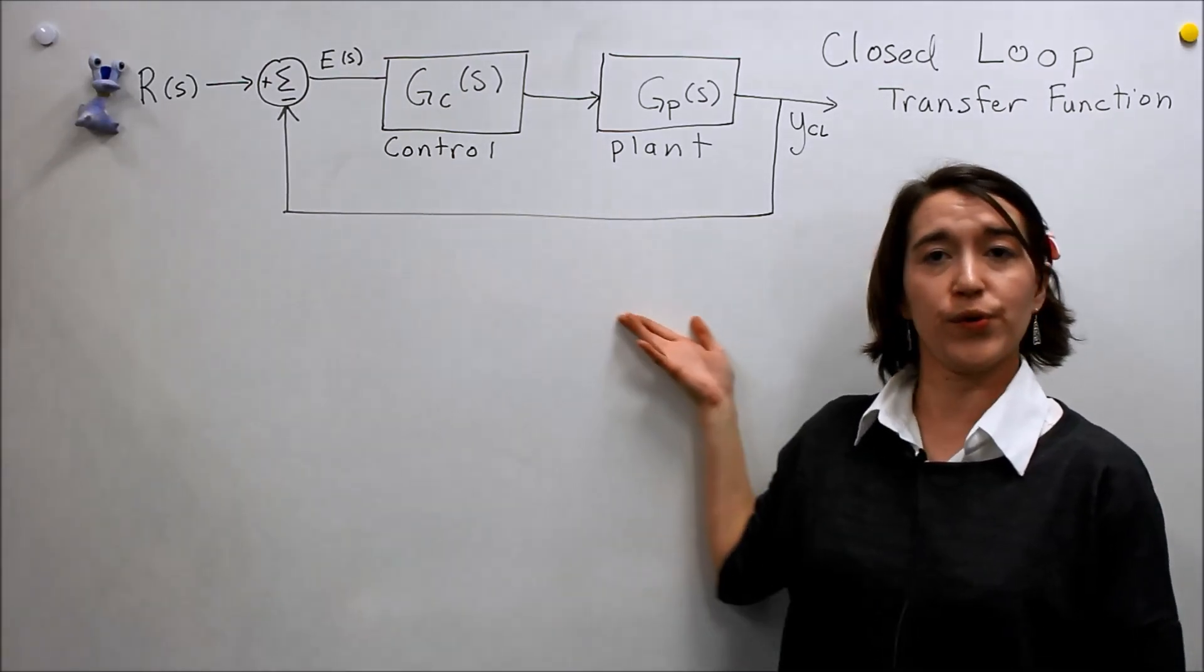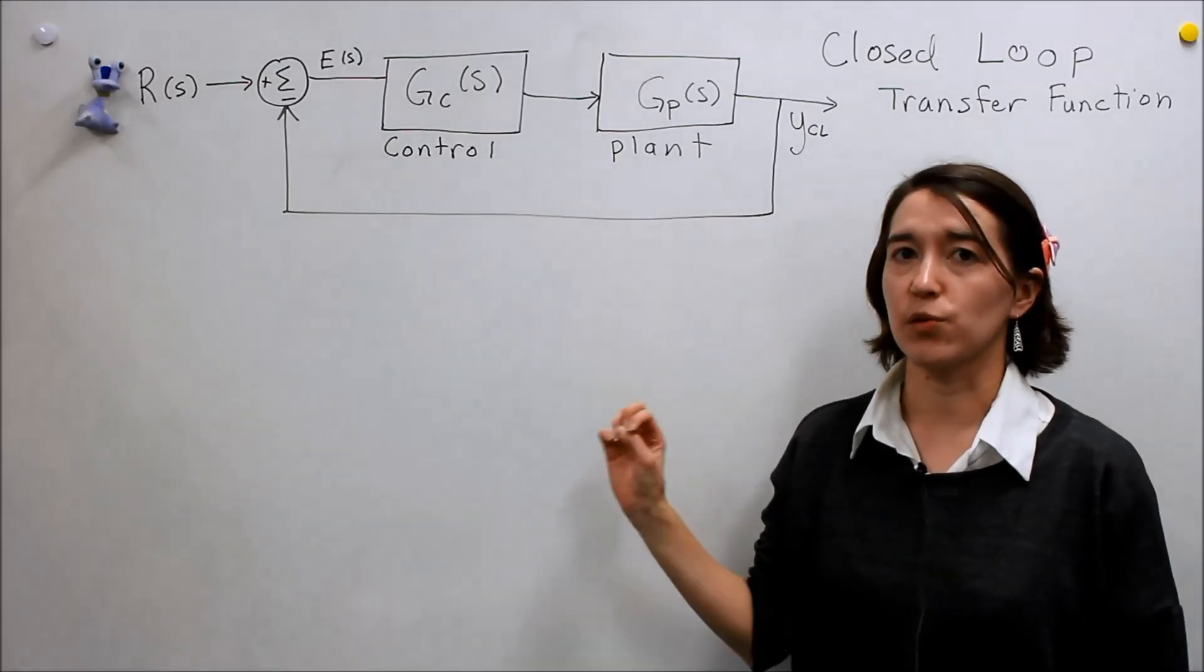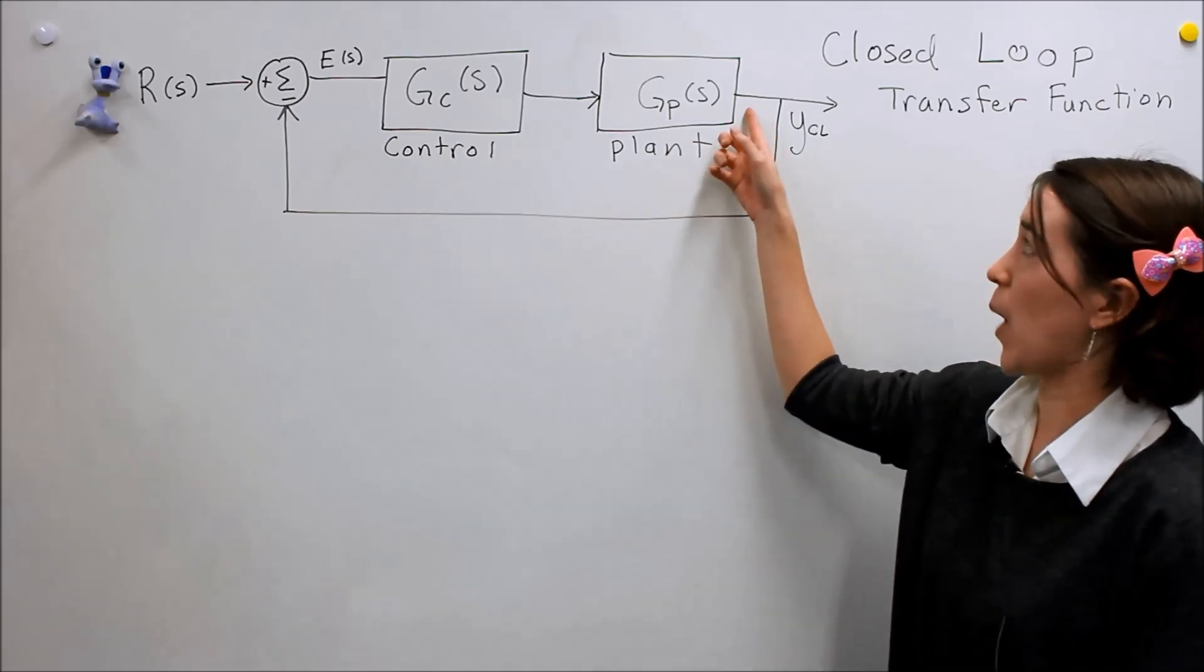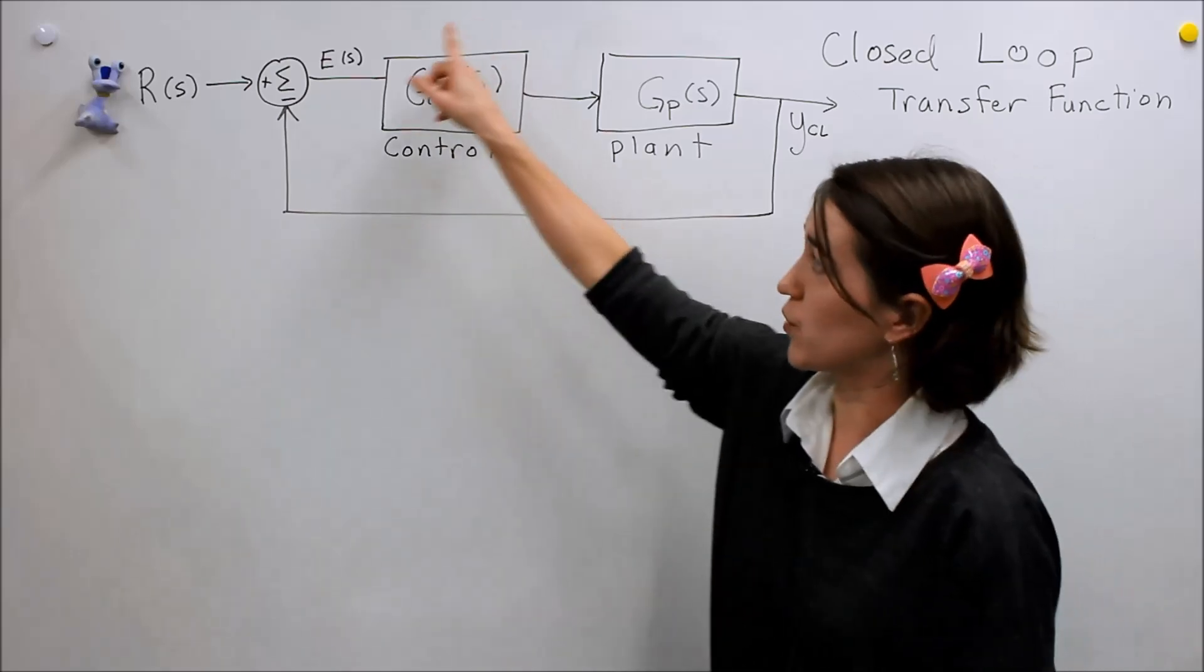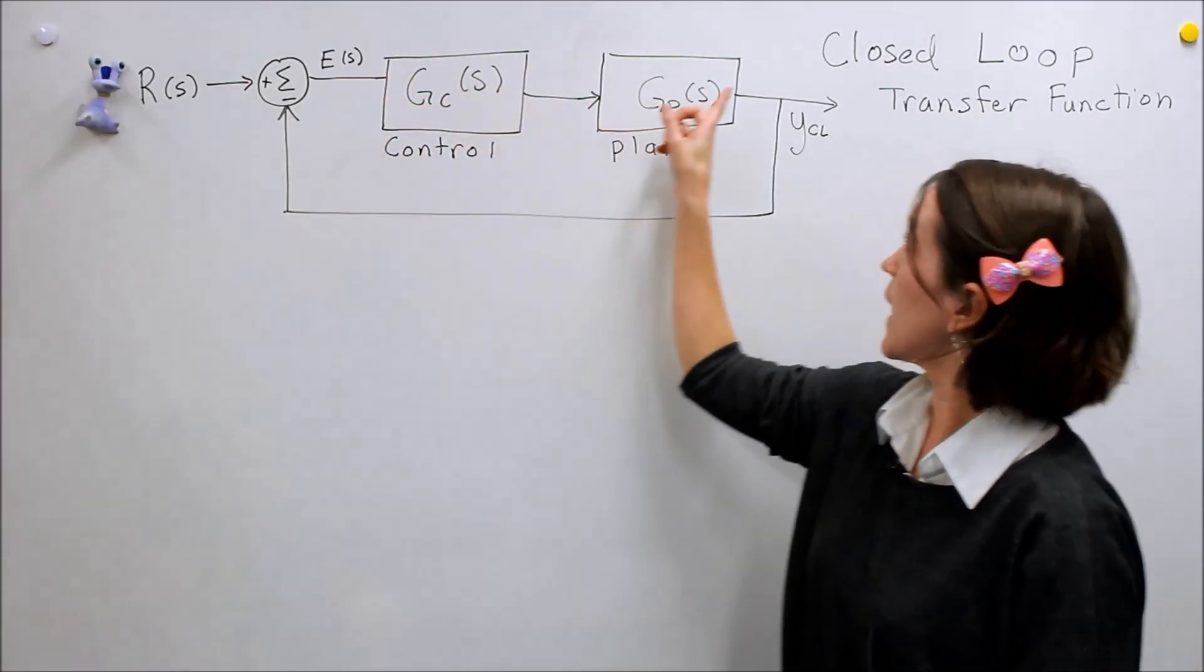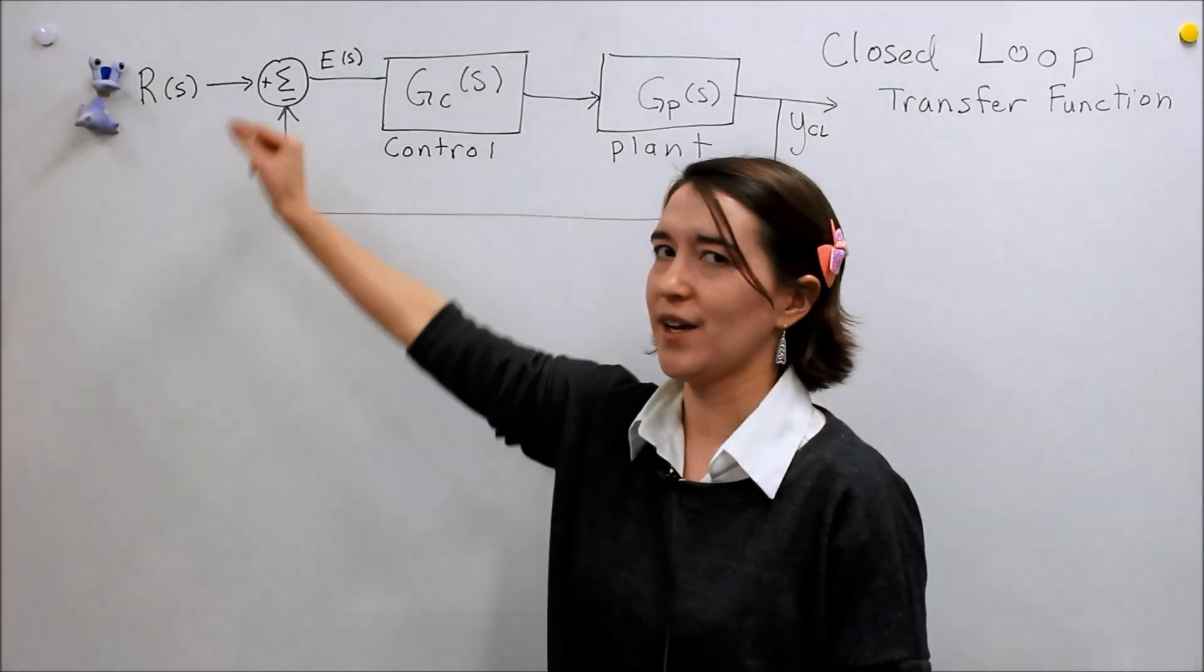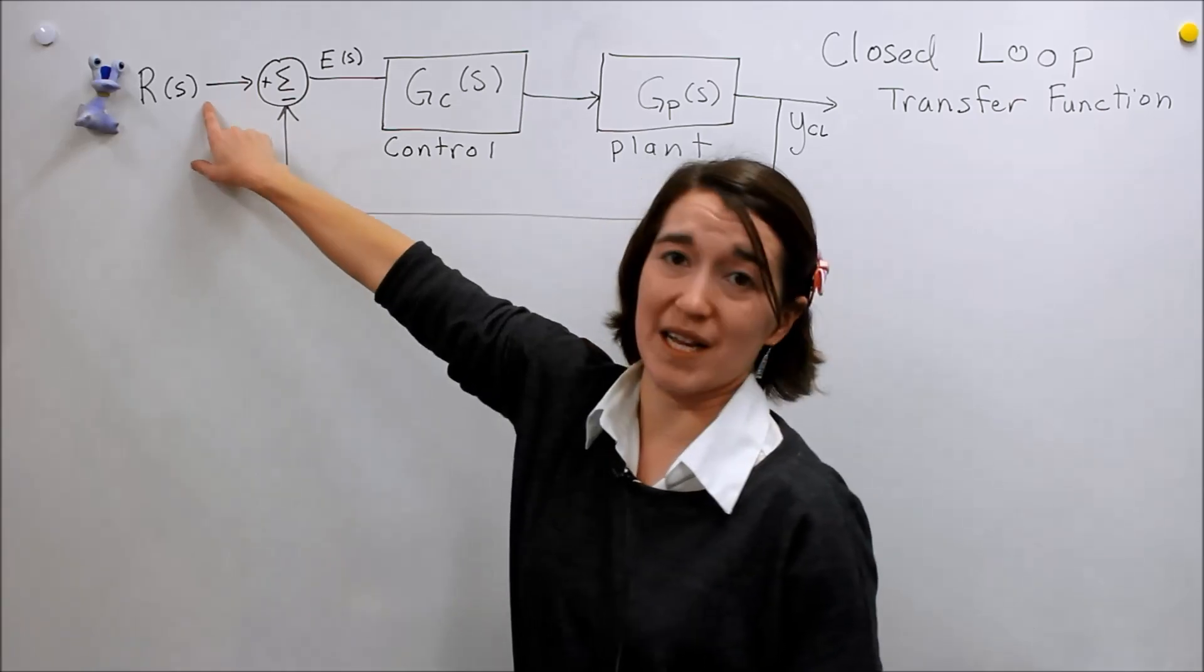This is the basic control loop that we have and we call this a closed-loop feedback, and we call it feedback because you're taking an output. So here's our plant and then we're adding some sort of control component and we have an output.